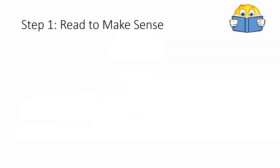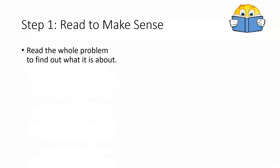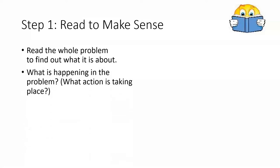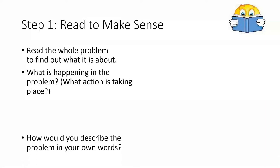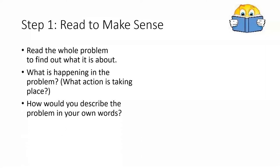The first step in our three-reads process is that we are going to read the problem to make sense of it. We are going to read the whole problem to find out what it is about. Then we're going to ask ourselves, what is happening in the problem? What action is taking place? Then we need to think about how we would describe the problem in our own words. We'll also want to figure out what questions we might have after reading the problem.